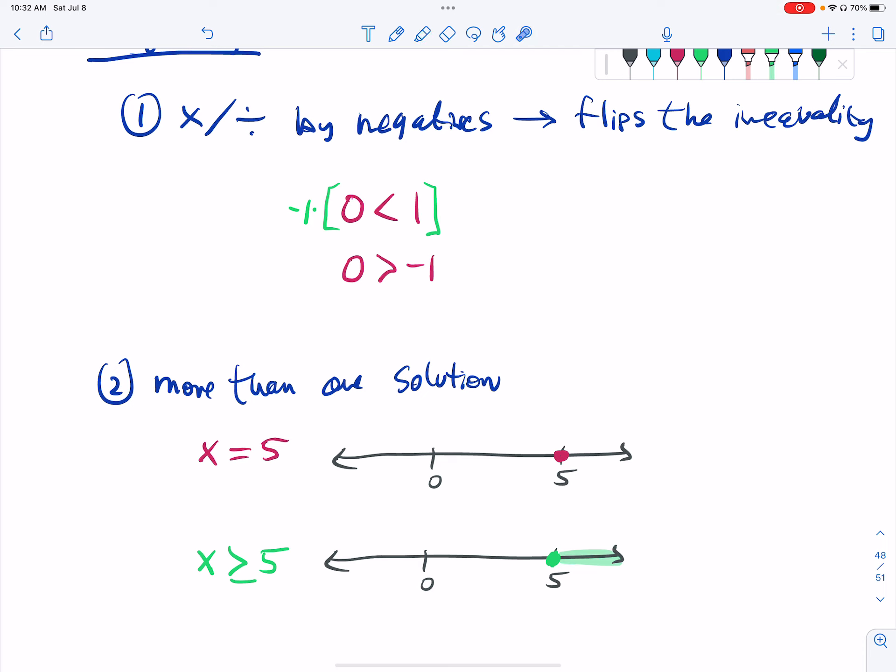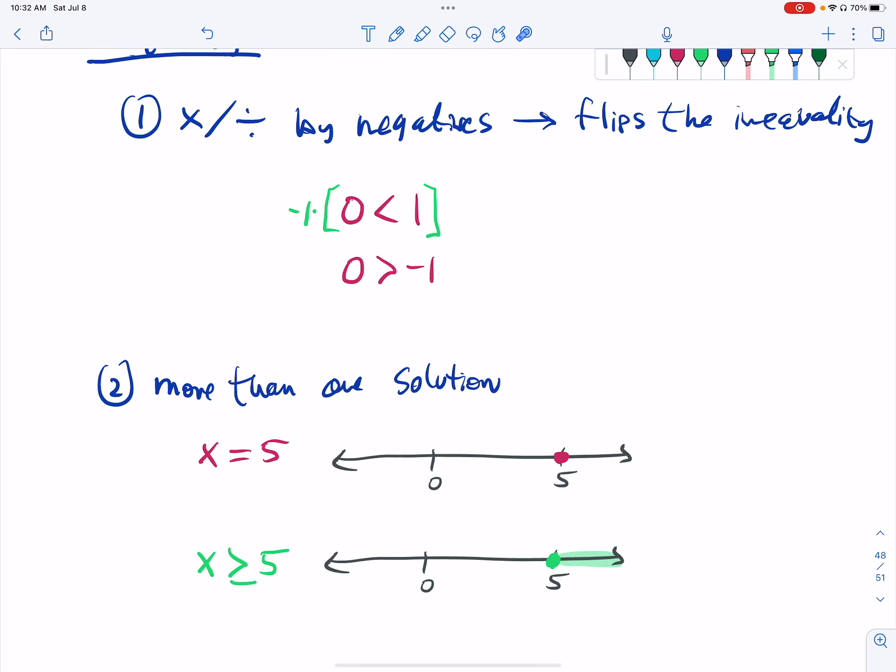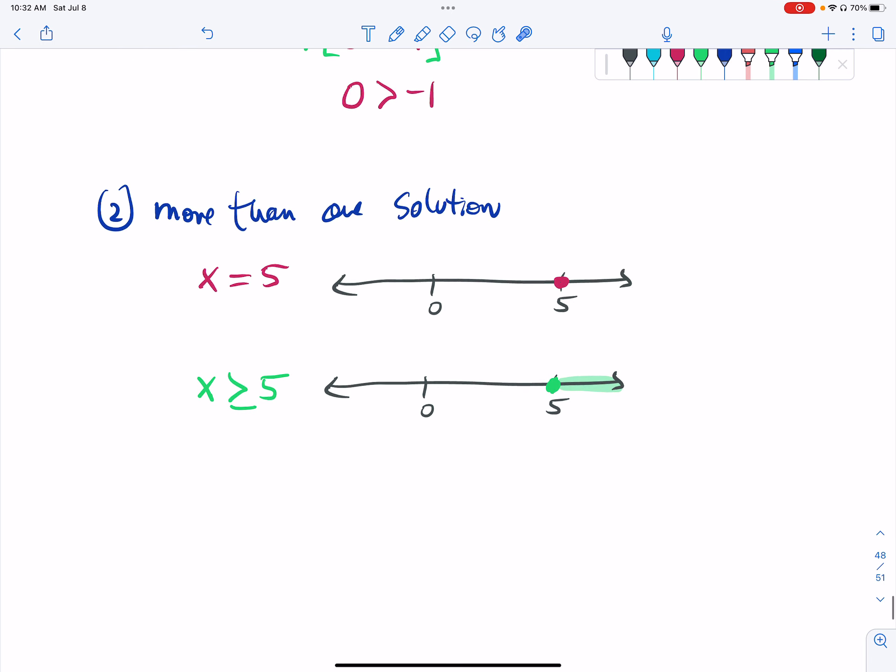Okay, this has only one solution. This has infinitely many solutions because 5 satisfies this inequality. 5 is greater than or equal to 5. Specifically, it's equal to 5. But I can pick something else over here like 7. 7 is greater than or equal to 5. Specifically, it's bigger than 5, right? Okay, so big difference in terms of the number of solutions here.